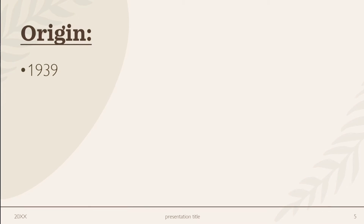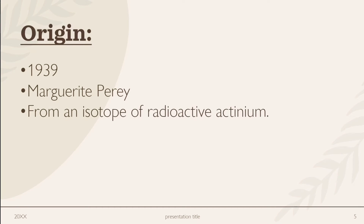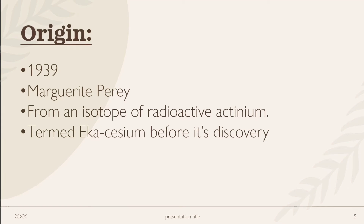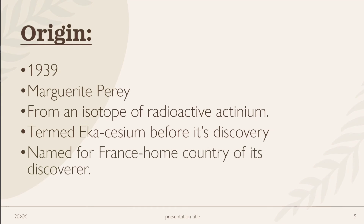Origin of Francium: The Francium element was discovered in 1939 in France by a physicist named Marguerite Perey. She discovered it through the radioactive decay of Actinium isotopes. It was previously also called Eka-Caesium or Actinium K. The name Francium is derived from the country France, where it was discovered.